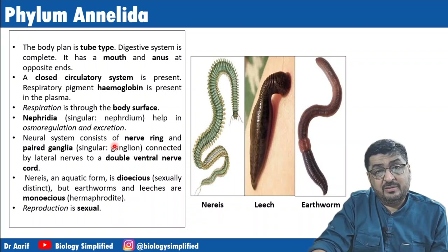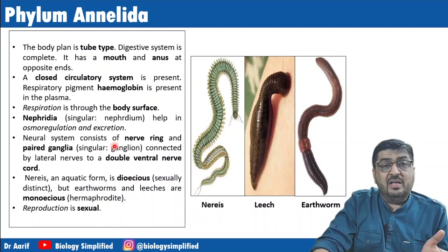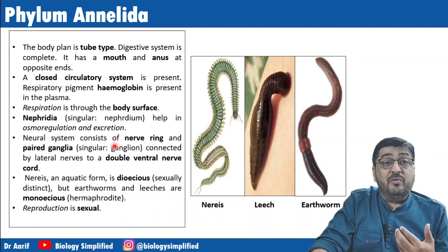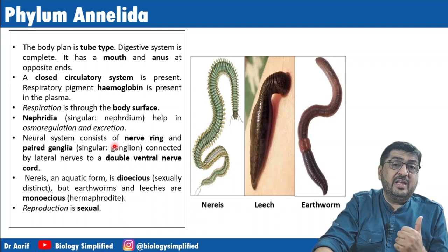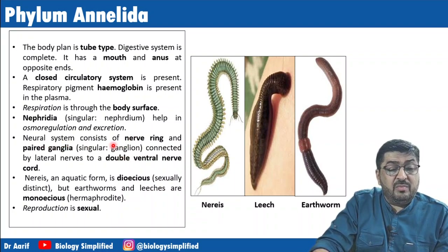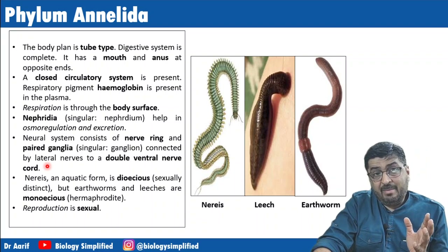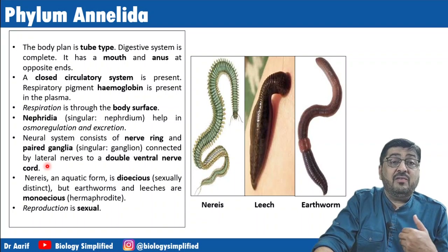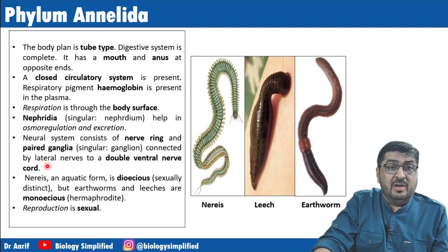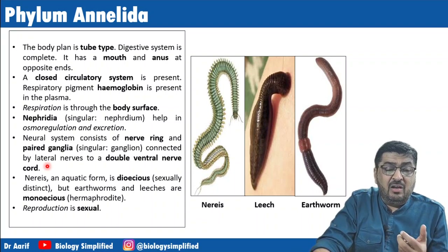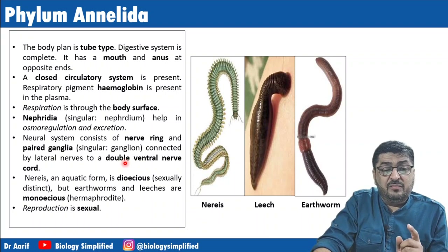The excretory organs have progressed from protonephridia in previous worm phyla to nephridia — a more complex and better-performing structure. The nervous system consists of a nerve ring and paired ganglia connected by lateral nerves to a double ventral nerve cord. We started from a nerve net in Hydra, then progressed to nerve ring and nerve cord. Importantly, in non-chordates the nervous system is ventral, whereas in chordates it is dorsal — that is a key differentiating feature.